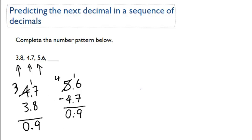So we can see the pattern is pretty simple. Between each number, the next number increases by 0.9. So from 3.8 to 4.7, that increases by 0.9. From 4.7 to 5.6, that increases by 0.9.